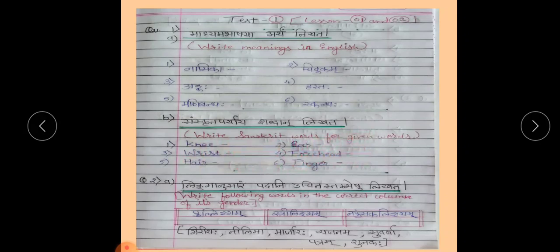The next question is Linganusaram Padani Ujita Stambesu Likhata, which means you have to write the following words in the correct column according to its gender.